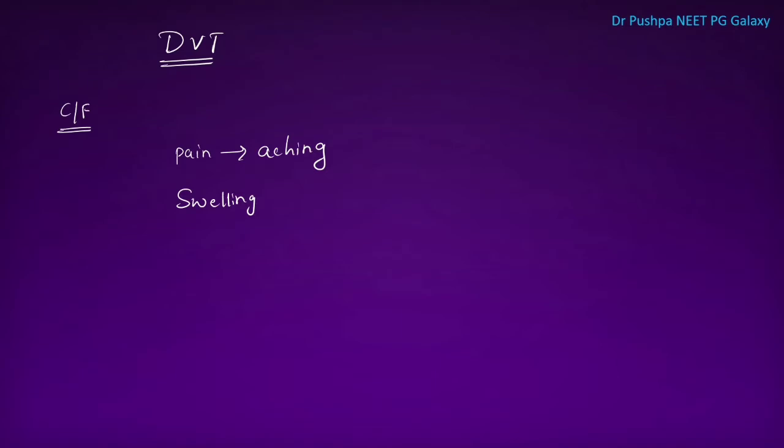What are the signs? We will see swelling and tenderness. There are two signs called Homan sign and Moses sign. Homan sign means forceful dorsiflexion of the foot with knee extended will elicit pain in the calf region. Moses sign means squeezing of the calf muscle causes pain. But these tests should not be done as they may cause dislodgement of the emboli causing pulmonary embolism.